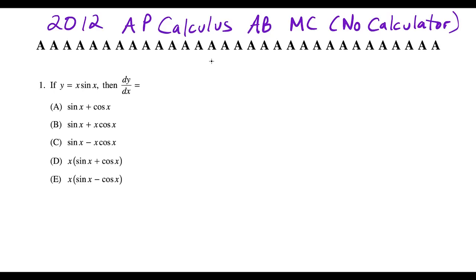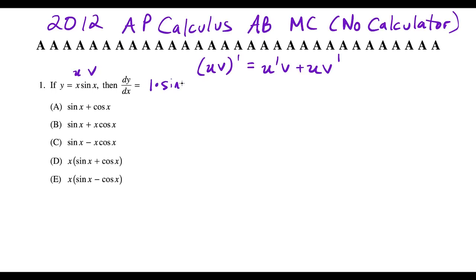The first question is taking the derivative of x·sin(x). We need to use the product rule — don't fall into the trap of doing just 1·cos(x). So u = x, v = sin(x). The derivative of the first times the second is 1·sin(x), plus x times the derivative of the second, which is cos(x). Simplified, this matches choice B.